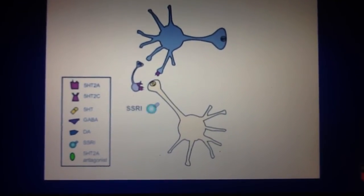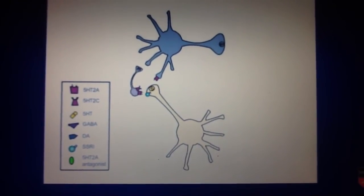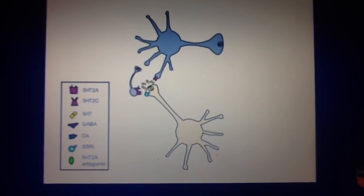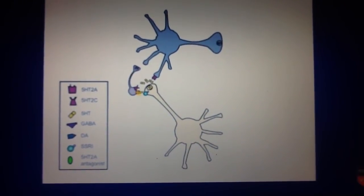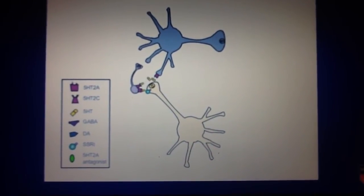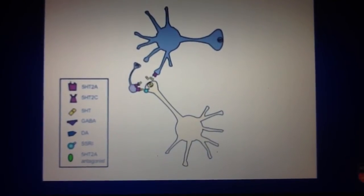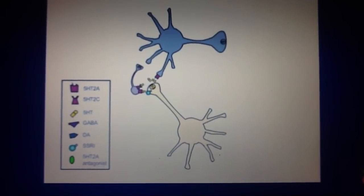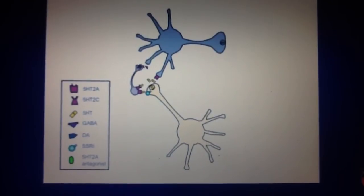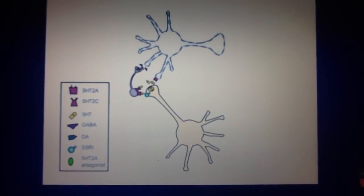Thus, when a serotonin reuptake inhibitor increases synaptic serotonin, the serotonin can bind to 5-HT2A and 5-HT2C receptors on GABA interneurons. This stimulates GABA release, which in turn inhibits dopamine release.